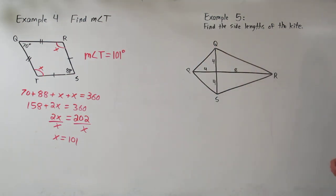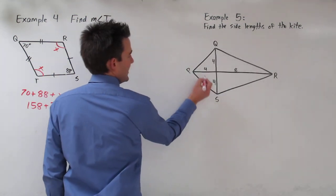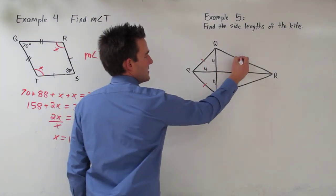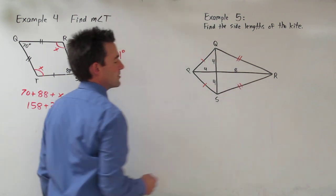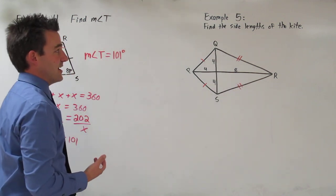In example 5, we're supposed to find the side lengths of the kite. Now from the last example, we learned that there's two pairs of consecutive sides that are congruent. It looks like these two sides are congruent and these two sides are congruent. Now we just need to find those sides.